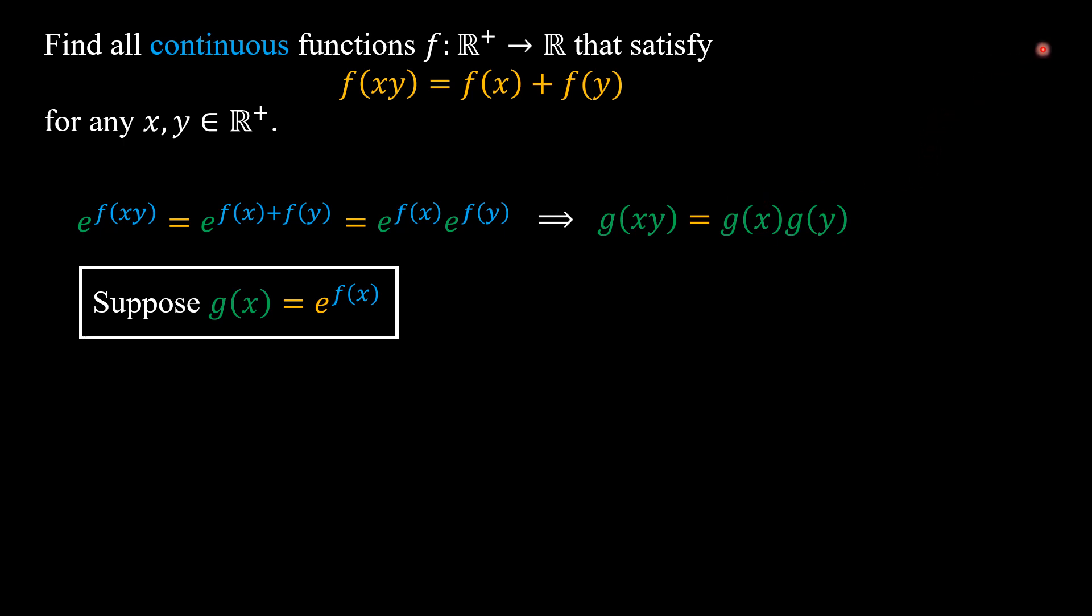The solutions are g(x) equals zero or g(x) equals x to the power of a, which a can be any real number. Since e to the power of any real number is always positive, g(x) equals zero is not possible, which means we must have g(x) equals x to the power of a.